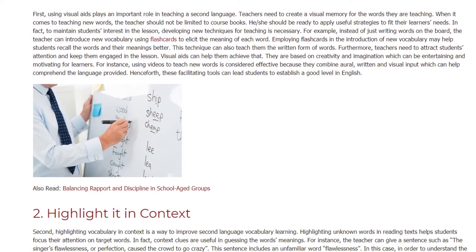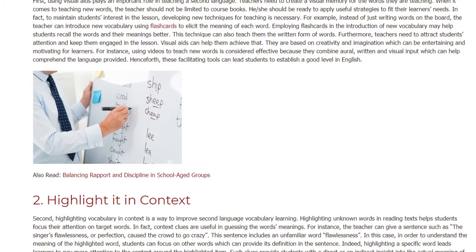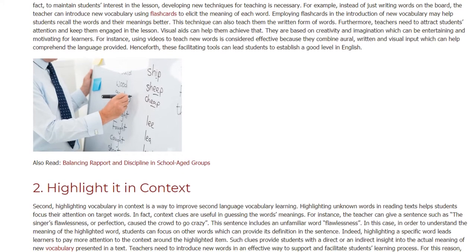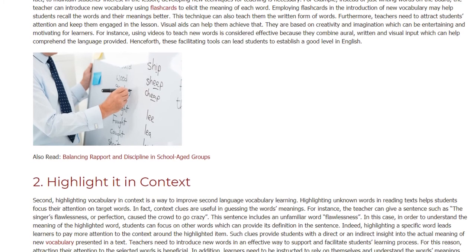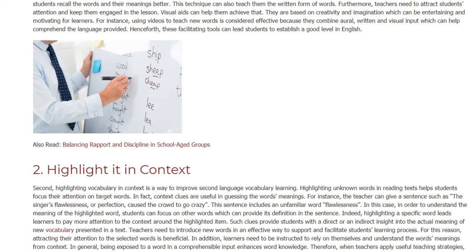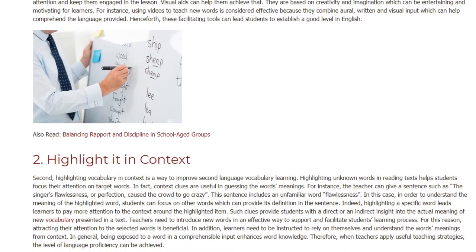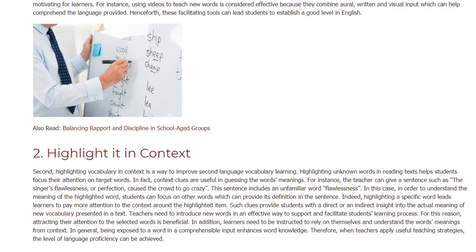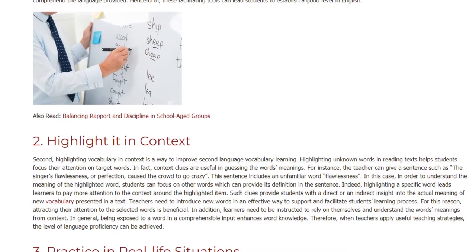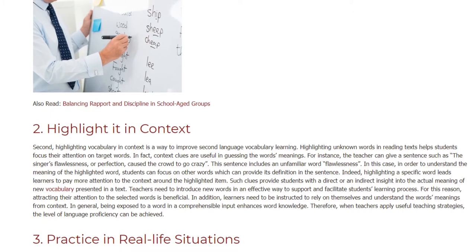Strategy 2: Highlighted in Context. Second, highlighting vocabulary in context is a way to improve second-language vocabulary learning. Highlighting unknown words in reading texts helps students focus their attention on target words. In fact, context clues are useful in guessing the word's meanings. For instance, the teacher can give a sentence such as 'the singer's flawlessness, or perfection, caused the crowd to go crazy.' This sentence includes an unfamiliar word — flawlessness. In this case, students can focus on other words which provide its definition in the sentence. Highlighting a specific word leads learners to pay more attention to the context around the highlighted item.